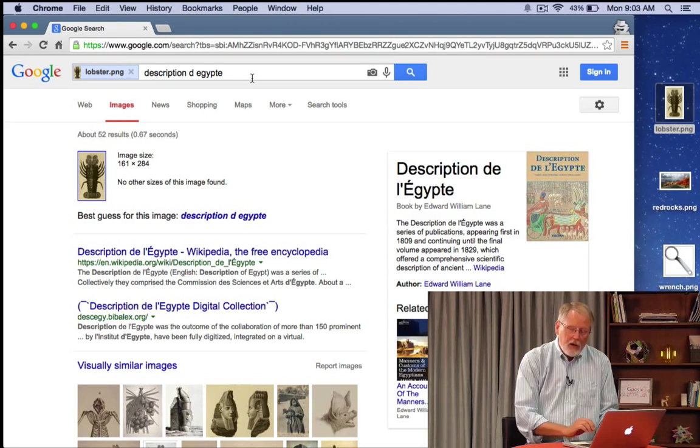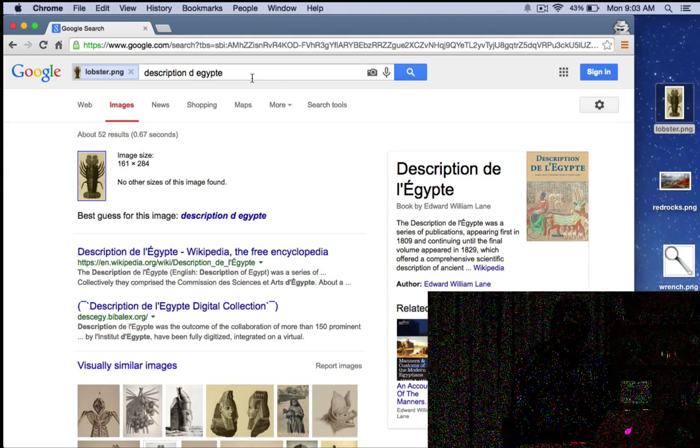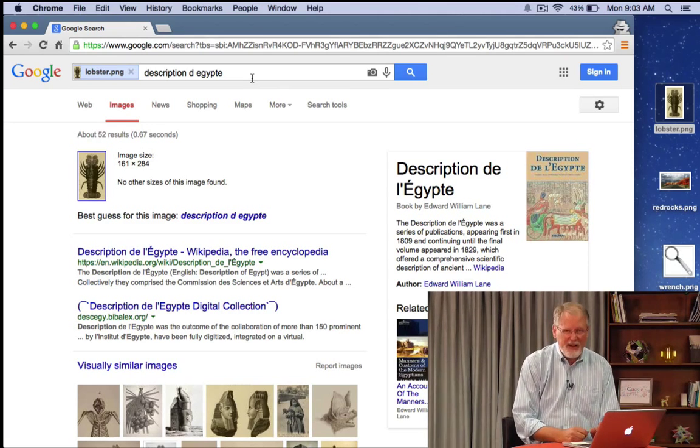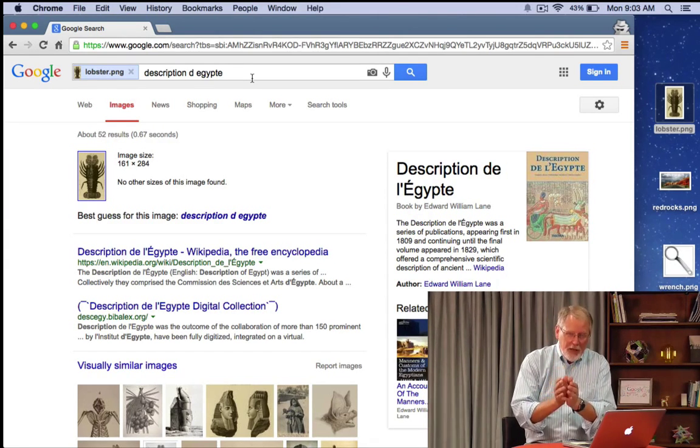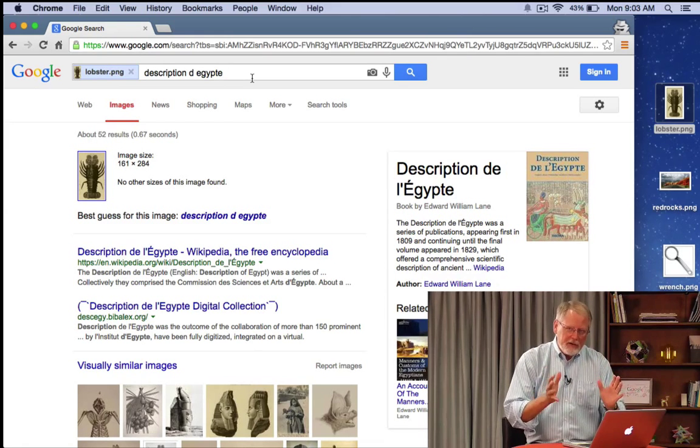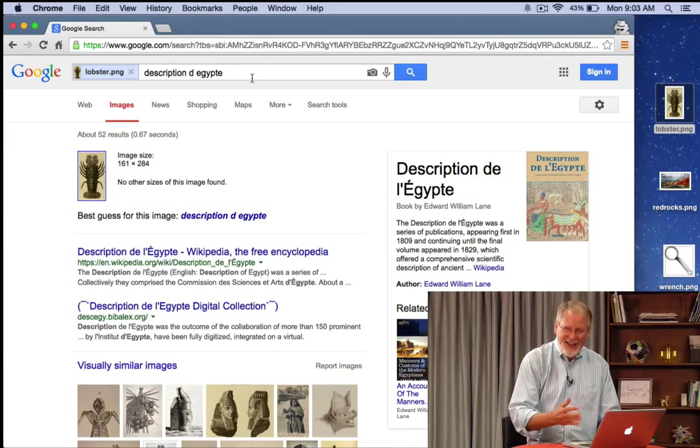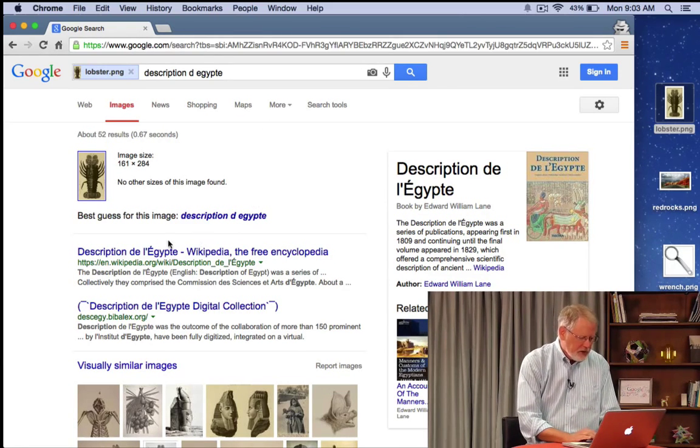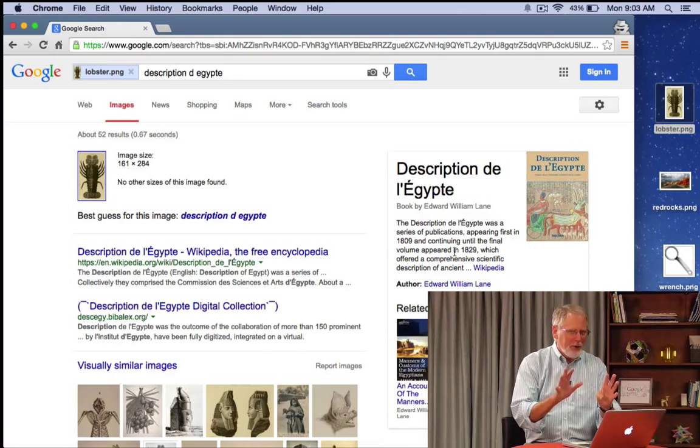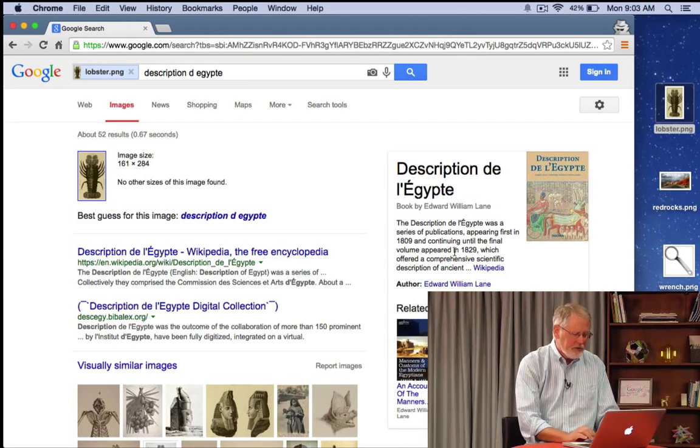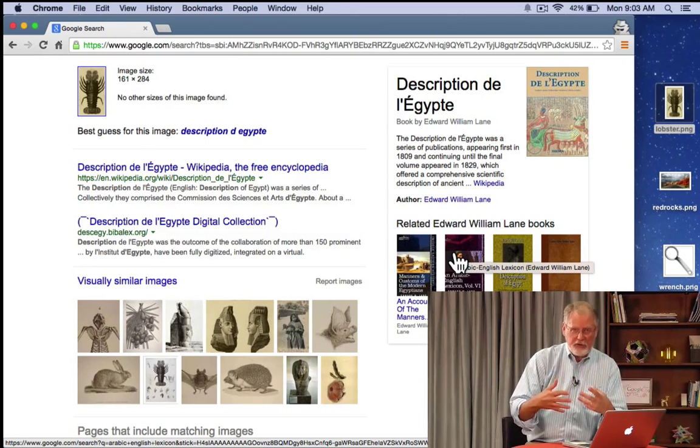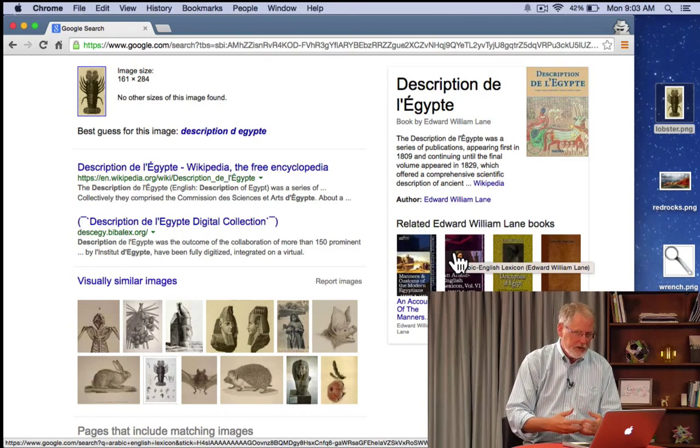And this turns out to be a book that was published after the Napoleonic expeditions at the end of the 18th century. So this book was published in 1809. And so by taking this image of the lobster, we can search all the internet in this case, including those old texts, and find where it came from. You can see here's the Wikipedia entry on it. There's a description of the book over here on the right. We have found it. And if you open up that book, you'll see, in fact, that lobster picture is in there very nicely, along with lots of other original work from describing Egypt at that time.